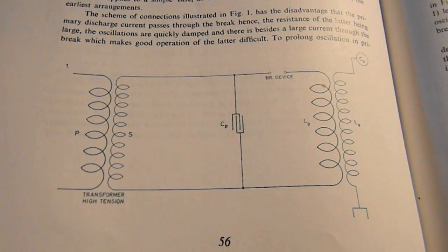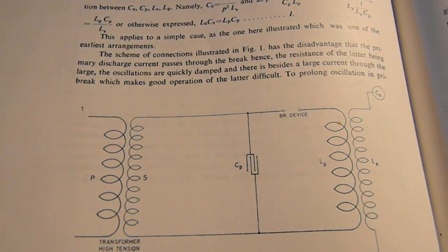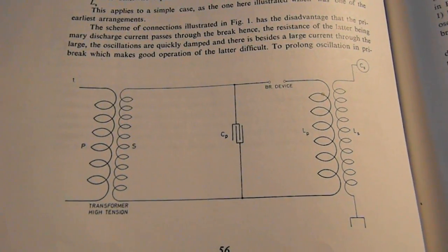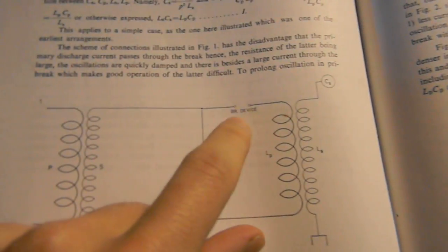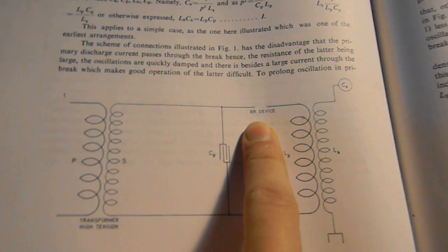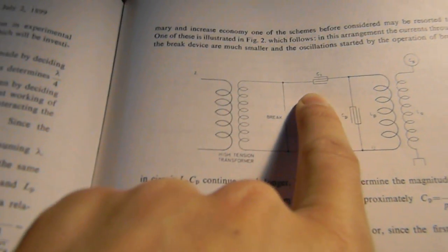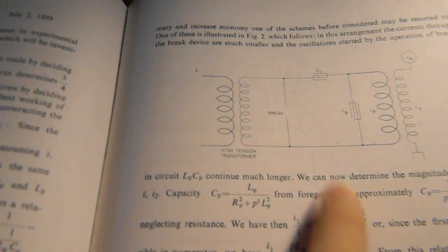And he says that this is a disadvantage. The oscillations are quickly damped and there's large current going through the brake device, which is my MOSFET, so it doesn't work very well, which is true. So then he goes on to say that you should have the brake here instead and have these capacitors to prolong the oscillations.